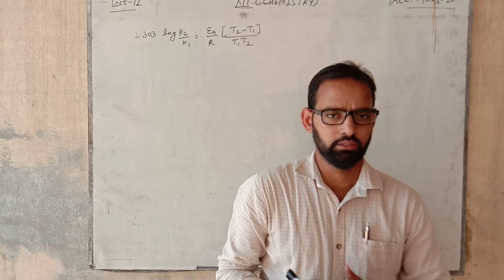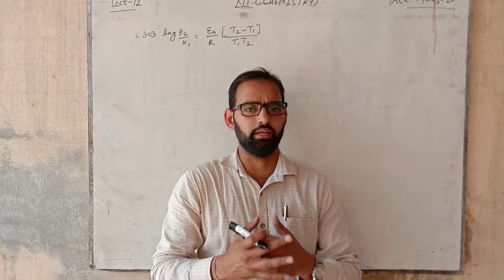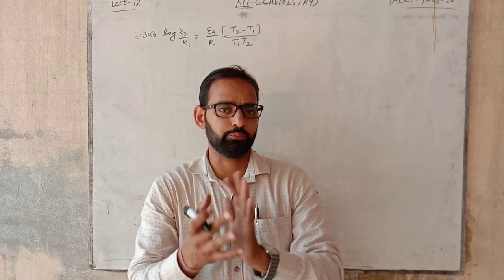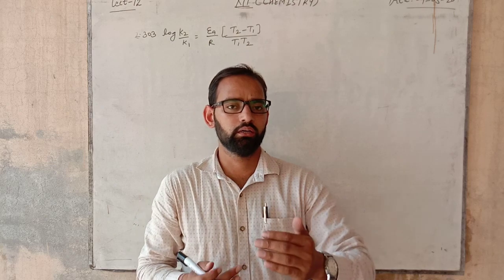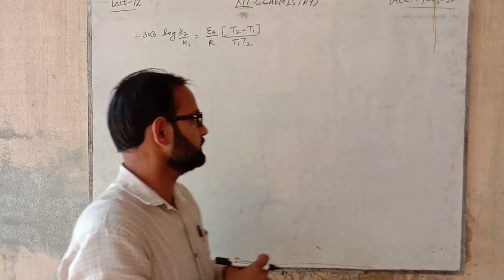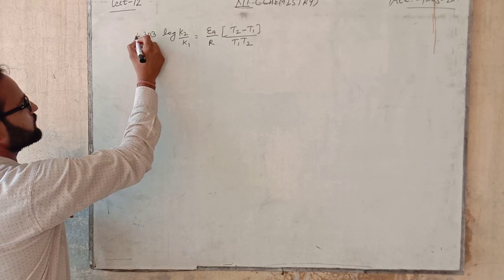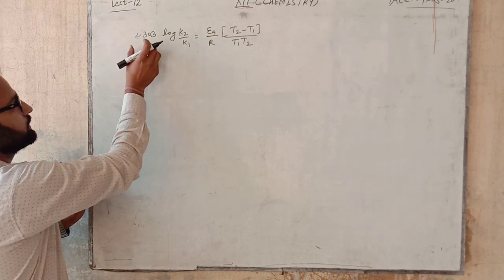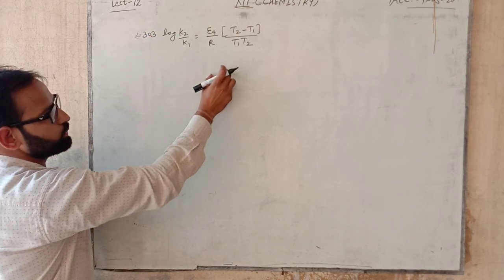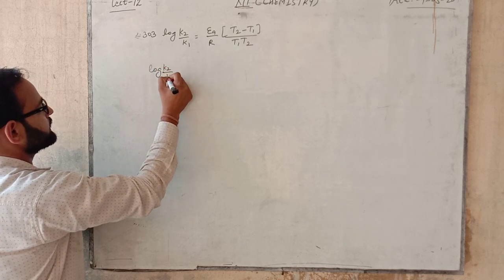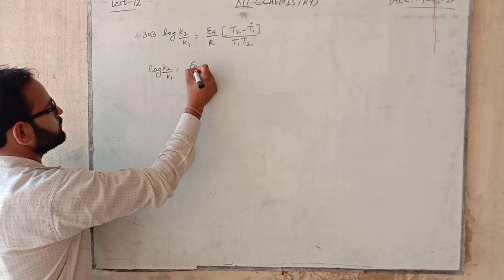Dear students, due to some technical problem the video was stopped at that point. We are continuing from that point. When we take this 2.303 towards this side we will get log k2 by k1 is equal to Ea divided by 2.303 R into 1 by T2 minus 1 by T1.